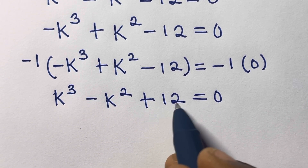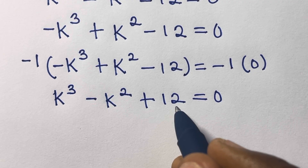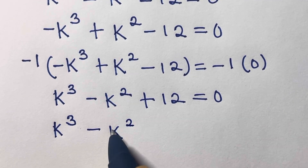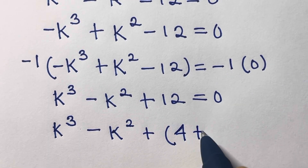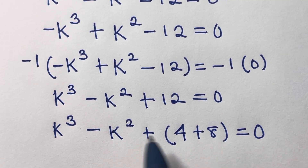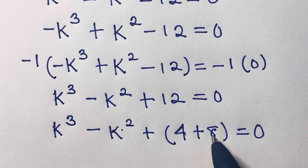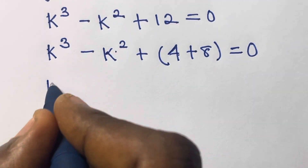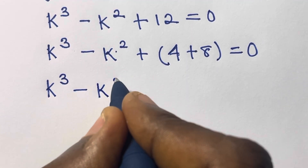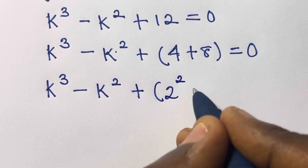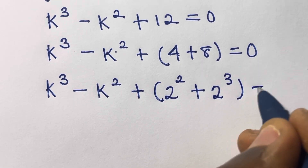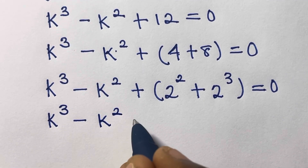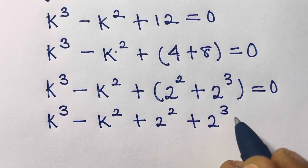From here we look at 12 and express it as 4 plus 8, so we have k cubed minus k squared plus 4 plus 8 equals 0. The reason we use 4 plus 8 is that 4 can be expressed as 2 raised to power 2 and 8 as 2 raised to power 3. So we have k cubed minus k squared plus 2 raised to power 2 plus 2 raised to power 3 equals 0.